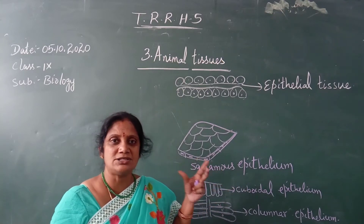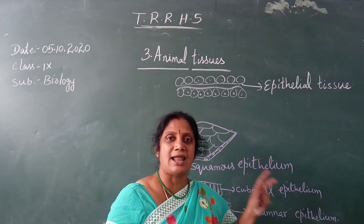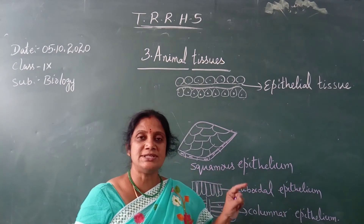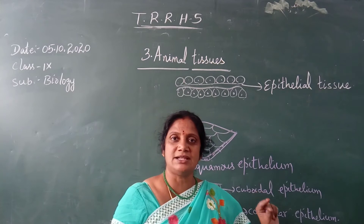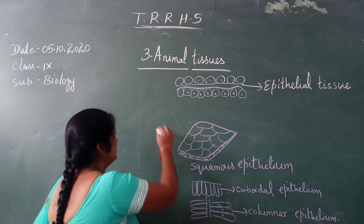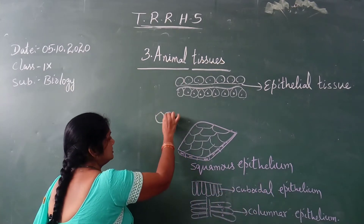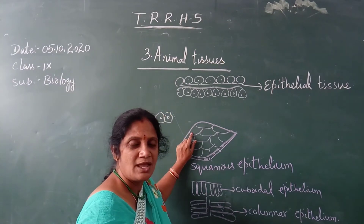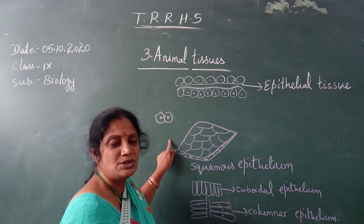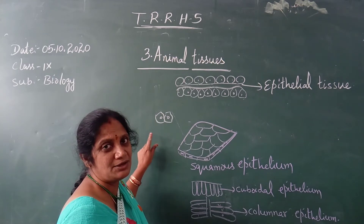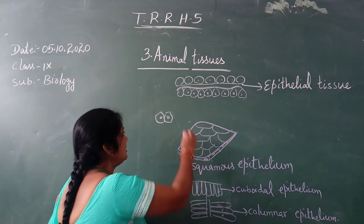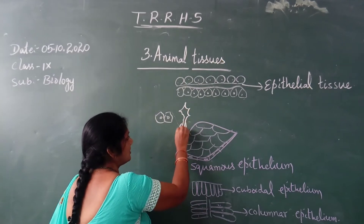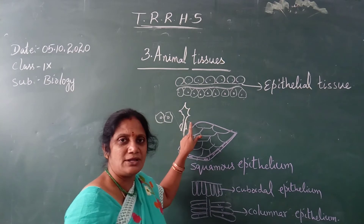The liver is the largest organ and the largest gland in our body. It is made up of hepatic cells. If you see these hepatic cells, all the cells are identical in their shape. Similarly, take nerve tissue — those cells are called neurons, and they all have a characteristic appearance you can easily identify.